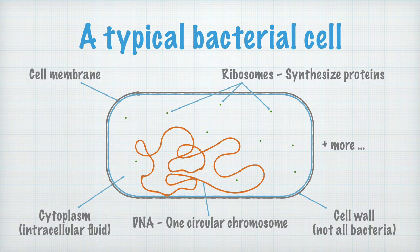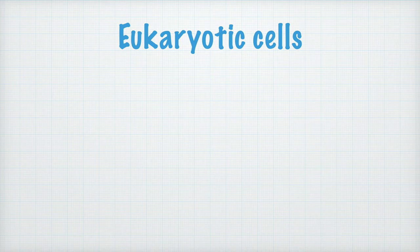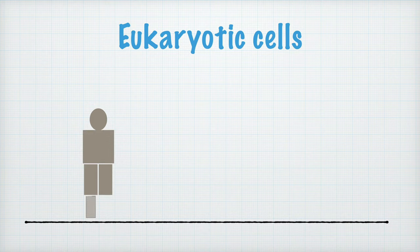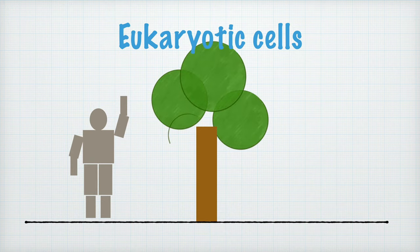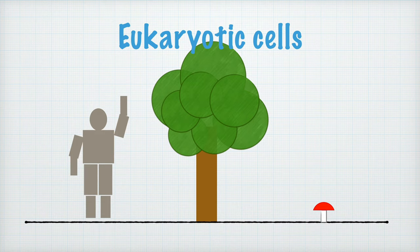Now let's look at some eukaryotic cells instead. There are three types of eukaryotic cells as well. First of all, there are animal cells — let's draw a simple human being, which is a kind of animal anyway. There are also plant cells, that of course make up plants. Then there are also fungal cells, but they are quite similar to animal cells, so I won't consider them any further in this video.